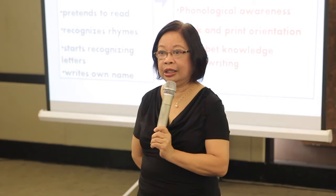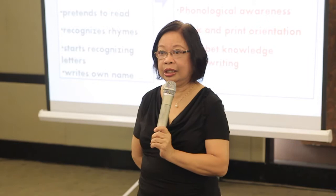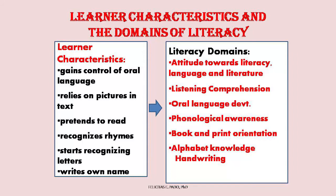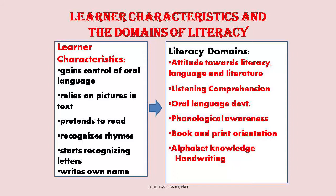Yesterday we talked about learner characteristics, which informed how the domains were crafted. During the emergent literacy stage — preschool up to beginning Grade 1 — children gain control of oral language. There is not much problem with oral language in the mother tongue; they come to school already equipped with vocabulary and expressions. But we are preparing them for reading in Filipino and in English, and oral language must be developed prior to learning to read in that language.